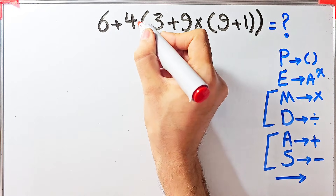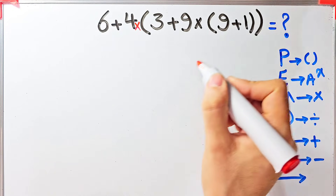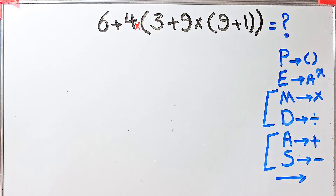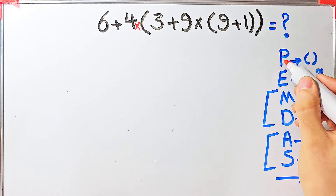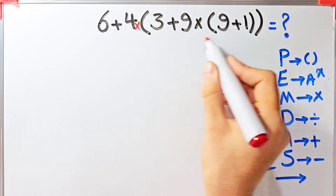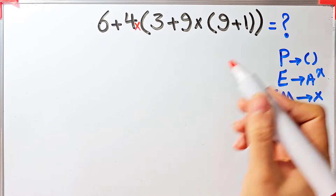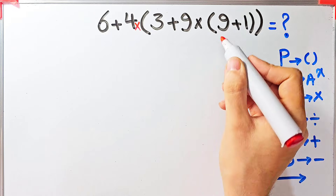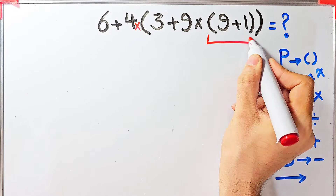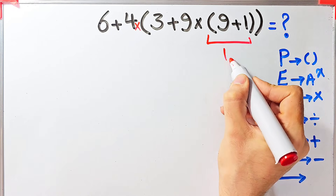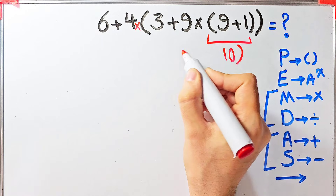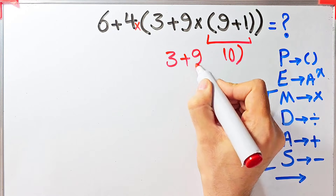According to the PEMDAS rule, first we simplify the parentheses. Inside the parentheses we have another parentheses: 9 plus 1 equals 10. Now we have 3 plus 9 then times 10 inside the parentheses.